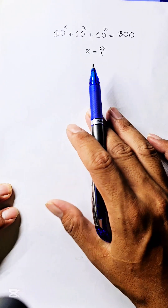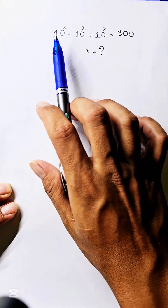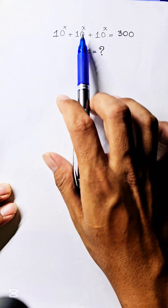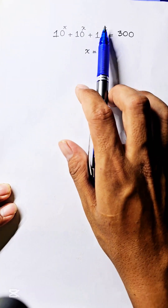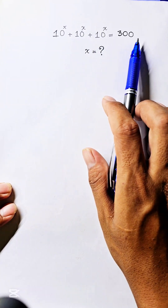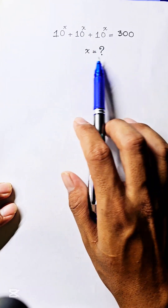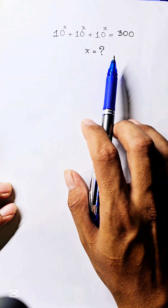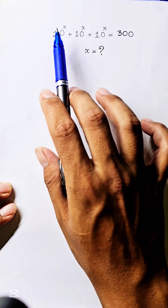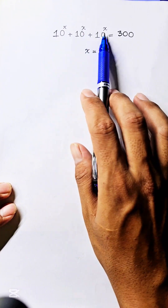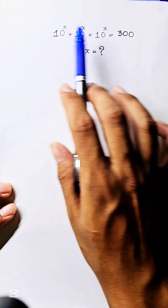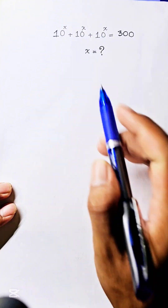This exponential equation: 10 power h plus 10 power h plus 10 power h equals 300 — find the value of h. We see that 10 power h is the same in all three terms, so we take 10 power h out as a common factor.